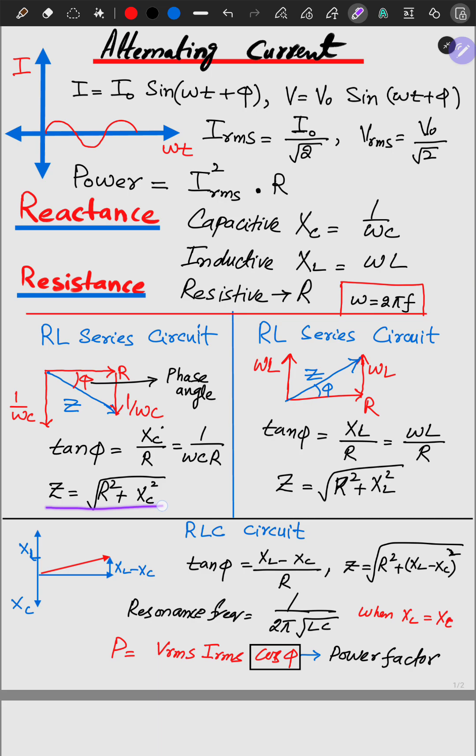The impedance in the case of RL series circuit, actually this is RC. RC series circuit is R square plus XC square whole under the root.